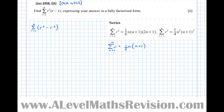If we separate that out, that's the same as the sum between r equals 1 and n of r cubed, take the sum of r squared — both of which we have closed formulae for. By closed I mean just an nth term expression.